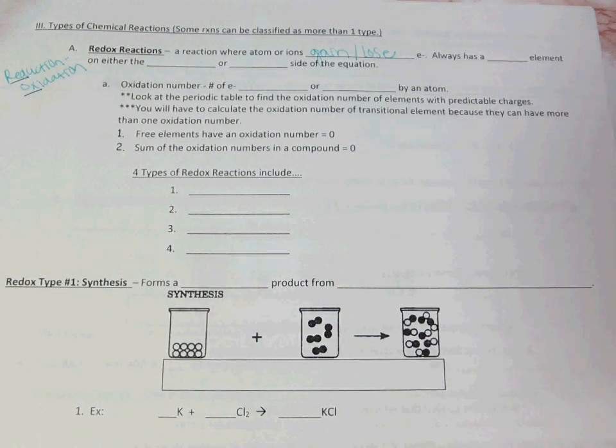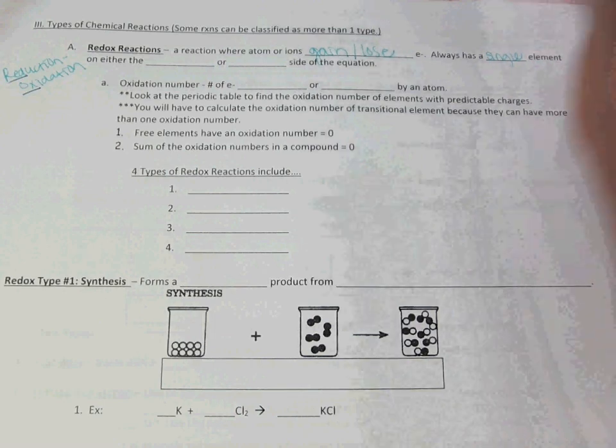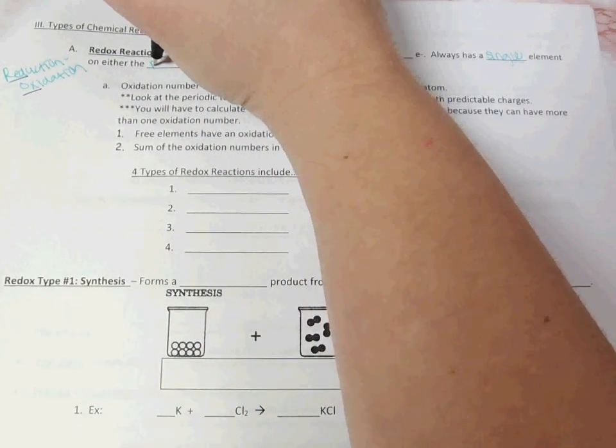You can tell that something will count as a redox reaction because it always has a single element on either the reactants or the product side.